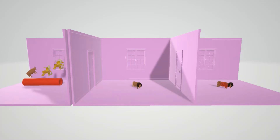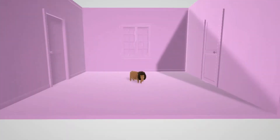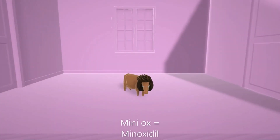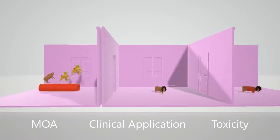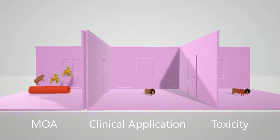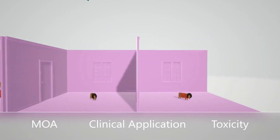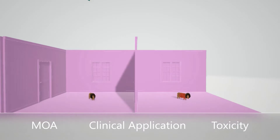Welcome to our scene on minoxidil, represented by the mini ox. In our pharmacology videos we're going to have three rooms: the first room represents method of action, the second room represents clinical application, and the third room represents toxicity.